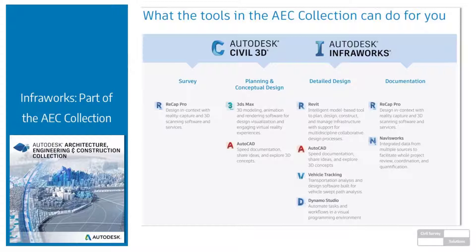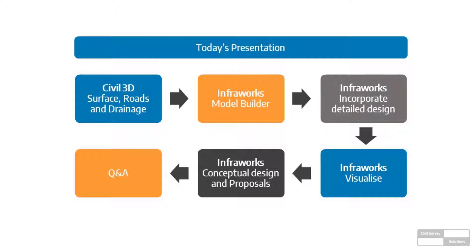InfraWorks is part of the AEC Collection — if you have the AEC Collection, you definitely have access to InfraWorks along with all the other tools. InfraWorks is a data aggregator in the AEC Collection, similar to Navisworks which also aggregates data. If I compare the two: InfraWorks is about selling the project — a visual explanation of what's going on — while Navisworks is about construction sequencing and checking for clashes. Navisworks is more of an industrial-strength BIM tool; InfraWorks is the visual front end. It's quick and easy to get information into InfraWorks, so it's a very useful companion tool to Civil 3D.